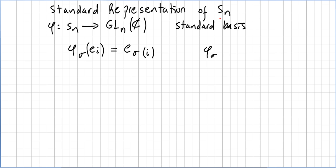We define a mapping φ from the symmetric n group to the general linear group of n by n matrices with complex entries, so we're going to get a representation for the symmetric n group.